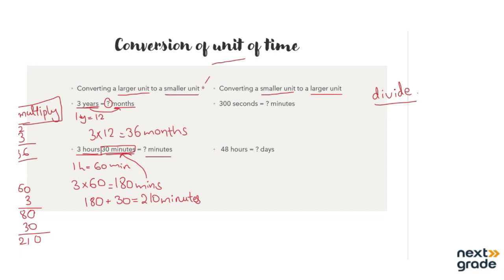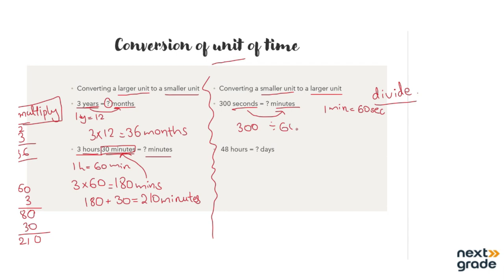Now we will discuss how to convert a smaller unit into a larger unit — for this we divide. First example: convert 300 seconds into minutes. Seconds are the smaller unit and minutes are the larger unit. In 1 minute there are 60 seconds. So we divide 300 seconds by 60.